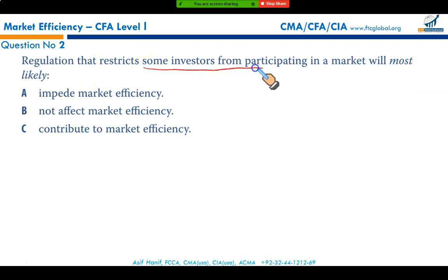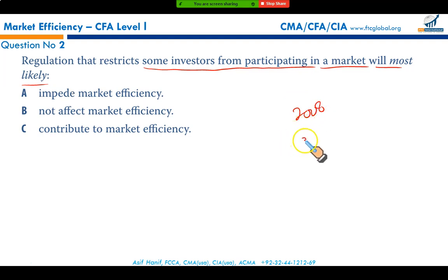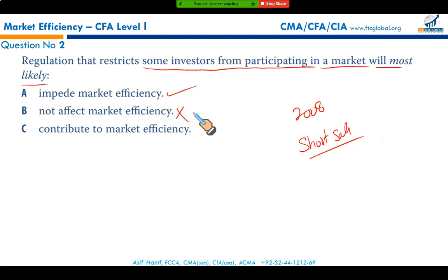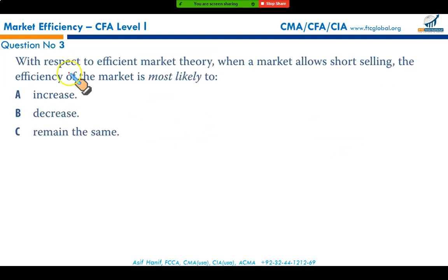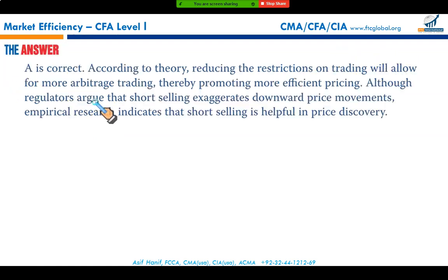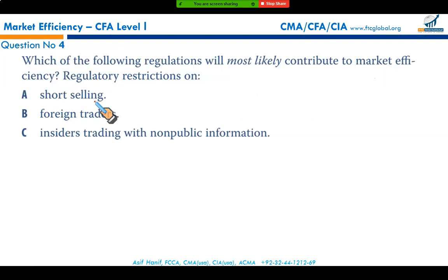A regulation that restricts some investors from participating in a market will most likely impede market efficiency. As seen in 2008, there was a restriction on short selling. Such restrictions will impede market efficiency — not contribute to it. When a market allows short selling and arbitrage, the efficiency of the market is likely to increase, making option A the correct answer.